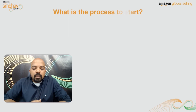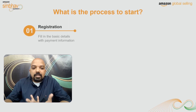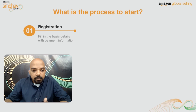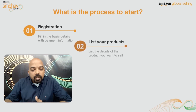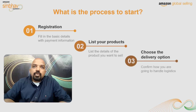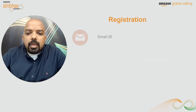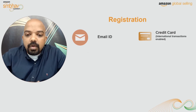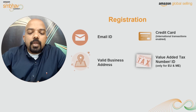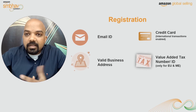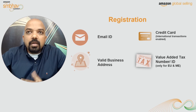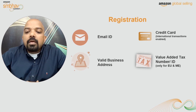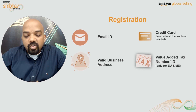In the subsequent slides we will look at each step in detail. The first step is registration — enrolling yourself as a seller on Amazon — for which you need to provide certain basic details and payment information. Once registration is done, you list your products or create product detail pages, then choose the delivery option. The requirements for registering as a seller on Amazon are: an email ID, a credit card with international transactions enabled, a valid business address, and if you plan to sell in Europe or the Middle East, a Value Added Tax number or ID registered there.